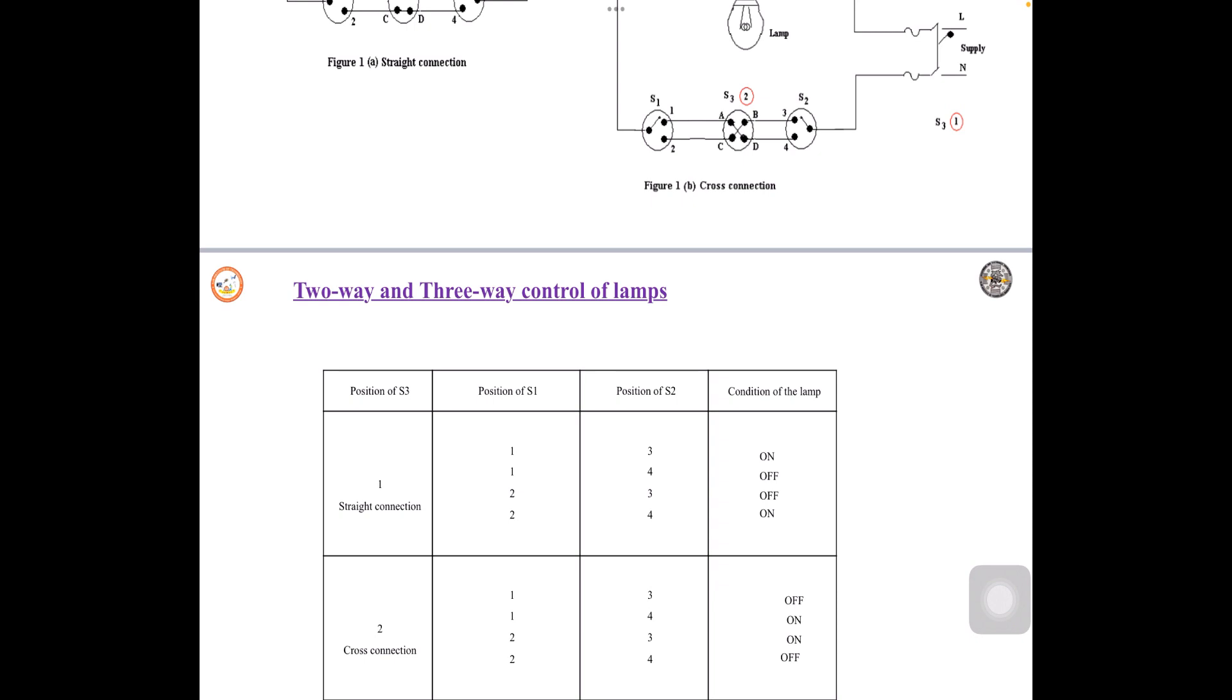Similarly the last connection, 2 to 4. So 2, 2 to C, C to B, B to 4, there is no interconnection. So lamp will be off.